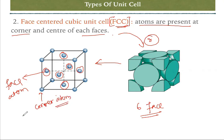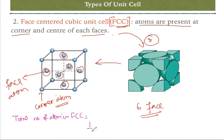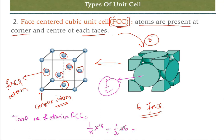Now let's calculate the total number of atoms in FCC. For the corner atoms: each corner contributes one-eighth and there are eight corners, giving one. For the face atoms: each face contributes one-half and there are six faces, giving three. So the total is one plus three equals four atoms. The total number of atoms in a face-centered cubic unit cell is four.